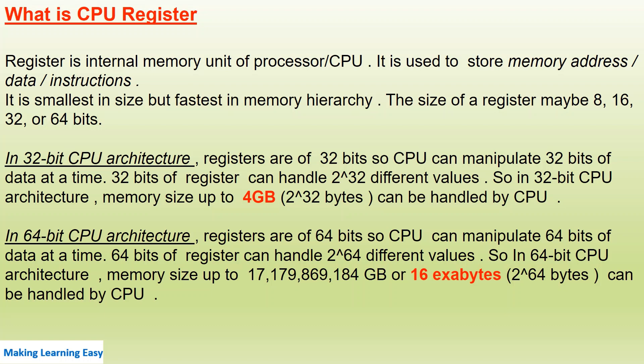In a 32-bit CPU architecture, registers are 32 bits, so the CPU can manipulate 32 bits of data at a time. 32-bit registers can handle 2 to the power of 32 different values. In a 32-bit CPU architecture, memory size up to 4 GB can be handled by the CPU.